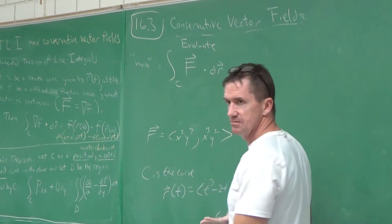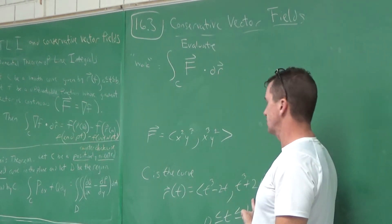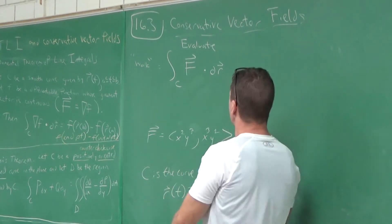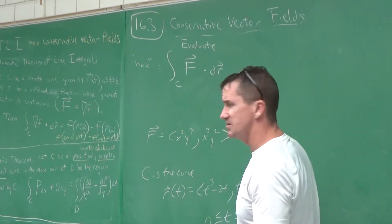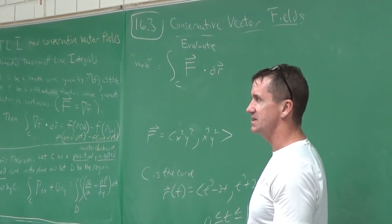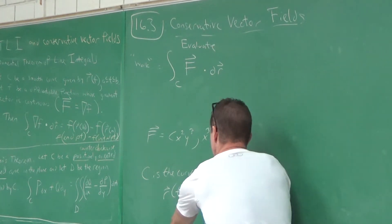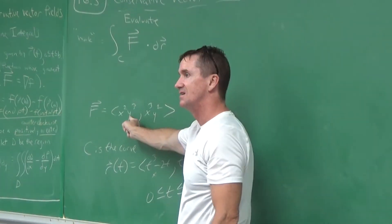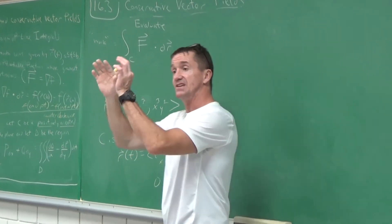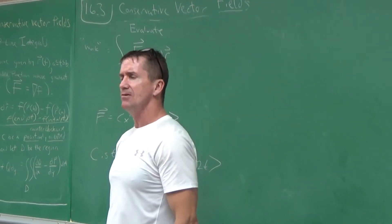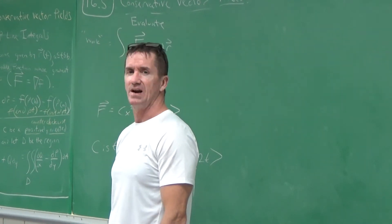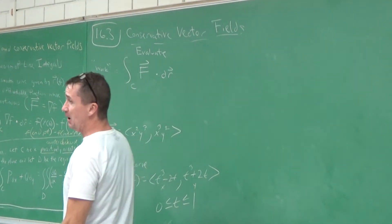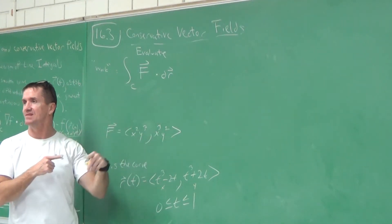Could I do this directly like in the last section? Absolutely — you'd get F composed of r of t dot r prime of t. But you can see that would be a lot of math. You'd have to plug the x-component in, square it, cube the y-component, and then dot with r prime of t. So let's investigate whether there's a way faster approach.